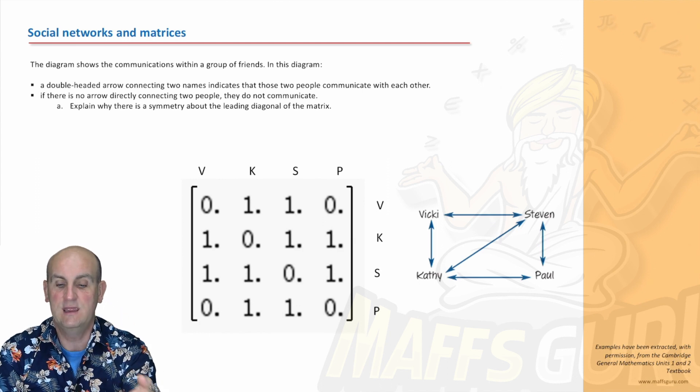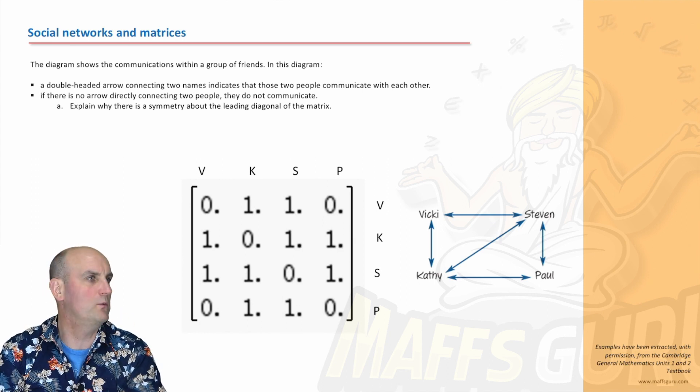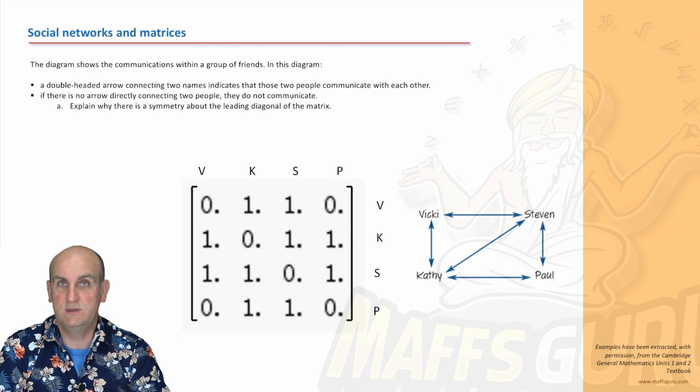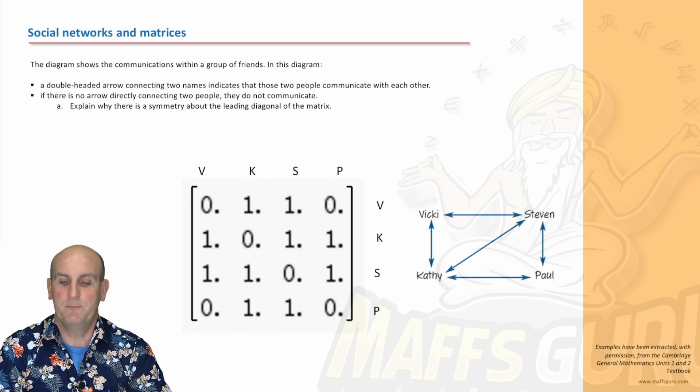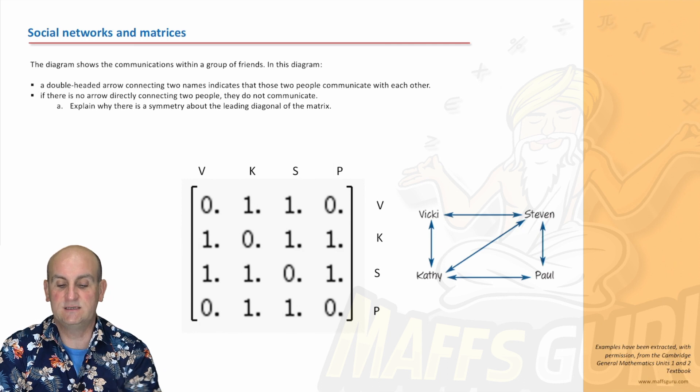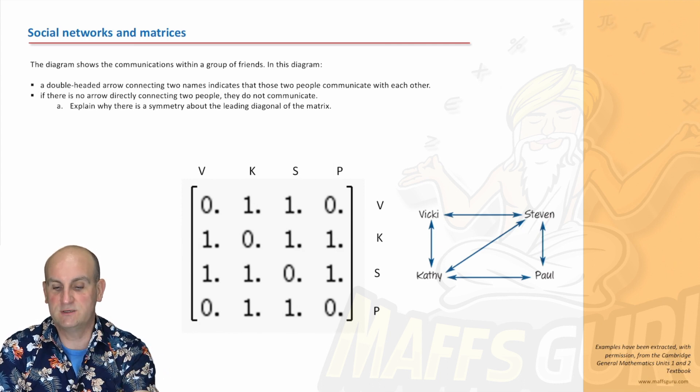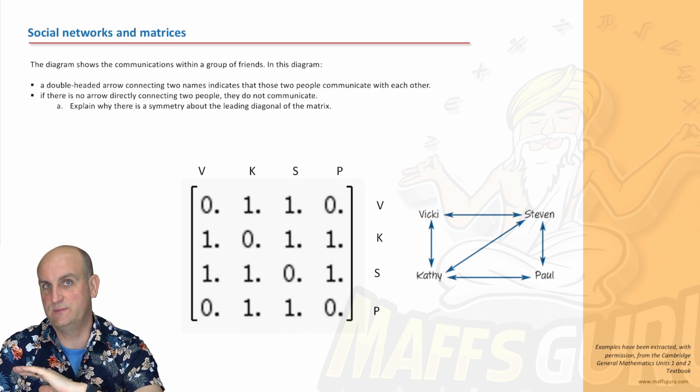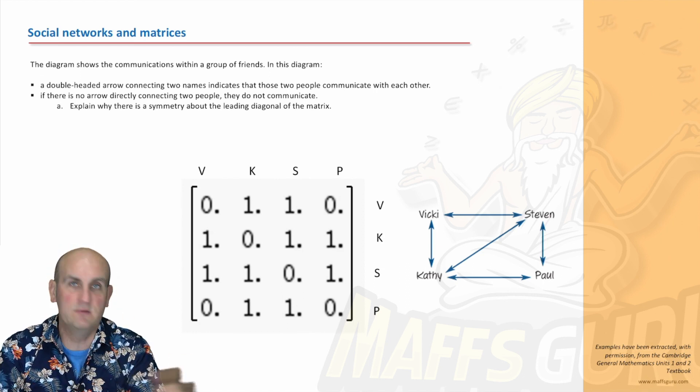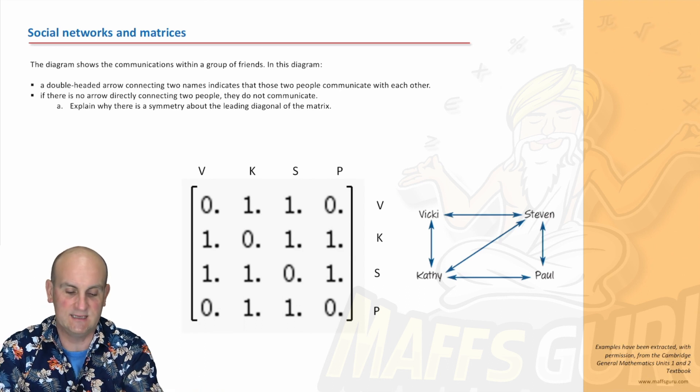Explain why there is symmetry about the leading diagonal of the matrix. It's because their two-headed arrows mean they're talking to each other, two-way communication. Stephen talks to Vicky and Vicky talks to Stephen. When wouldn't they talk to each other? Maybe Stephen only speaks English and Vicky speaks French and English. It's a pretty ropey example, but anyway.